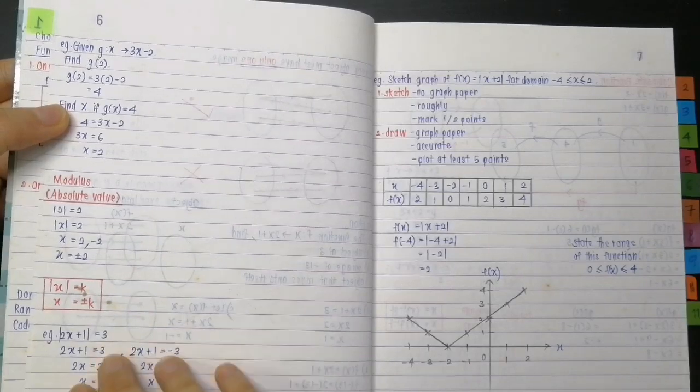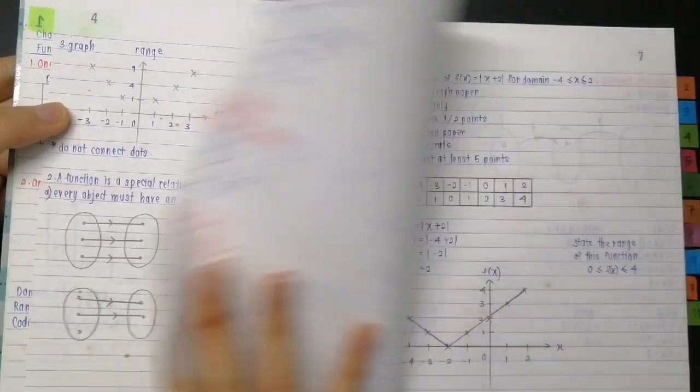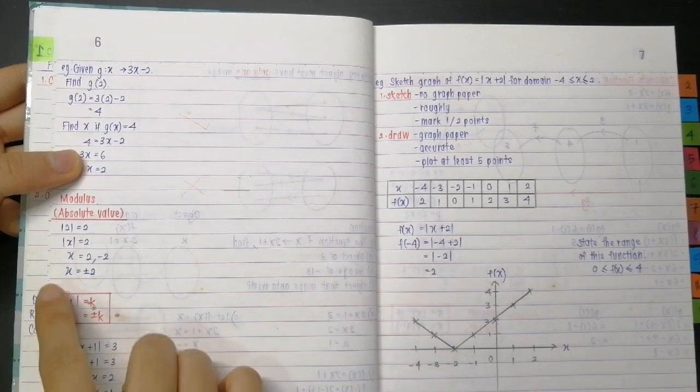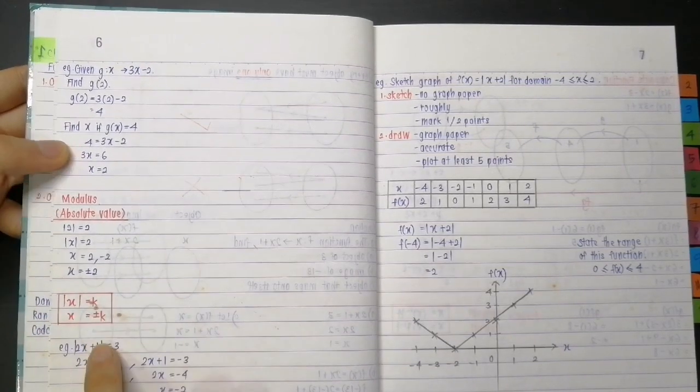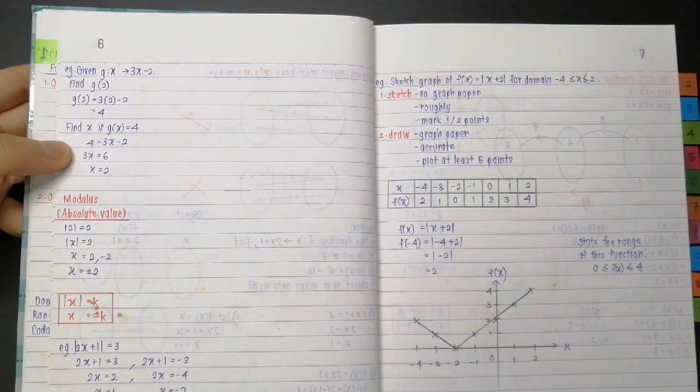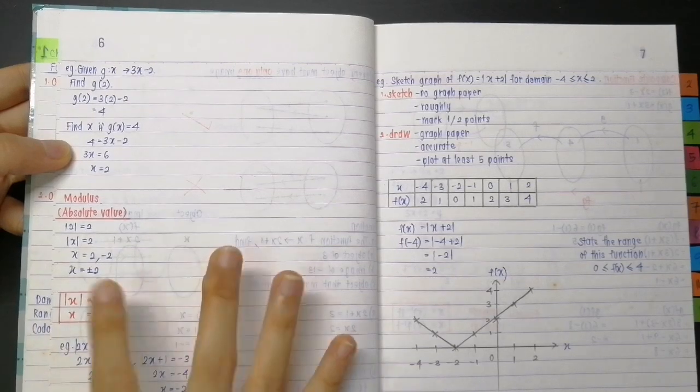So I was pretty organized back then. And then, yeah, there's more notes. And then as we proceed into this flip through, you will see that there are certain formulas which I bracket with red pen. These are like very important formulas that I want myself to remember, so that's why I used red pen.